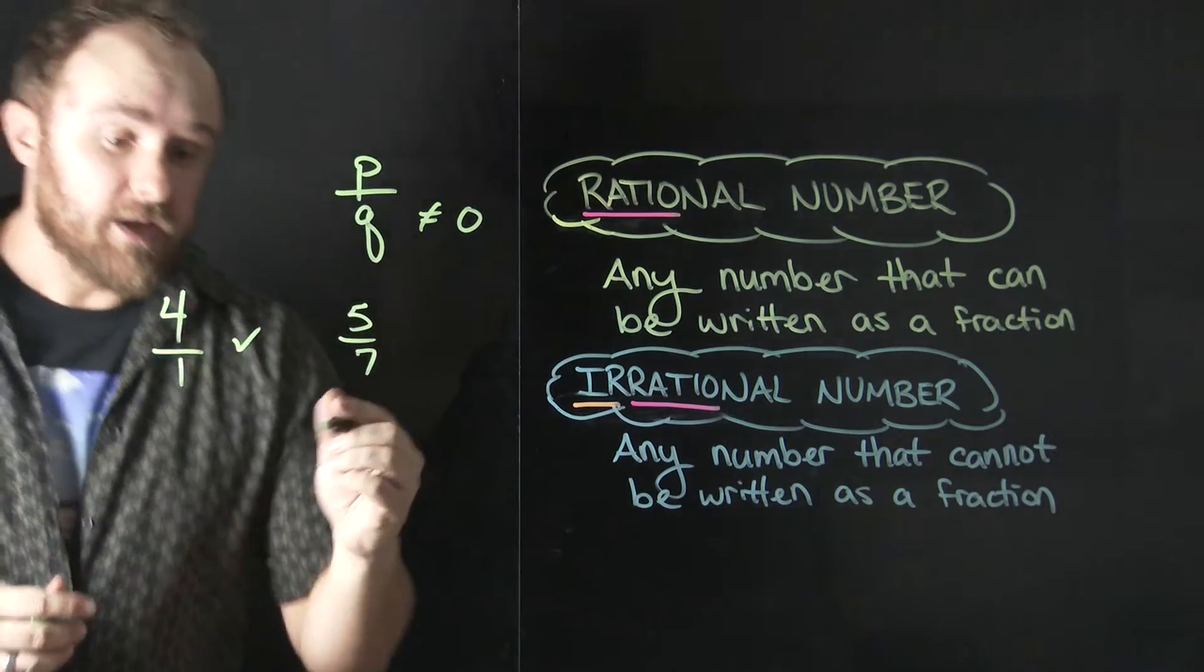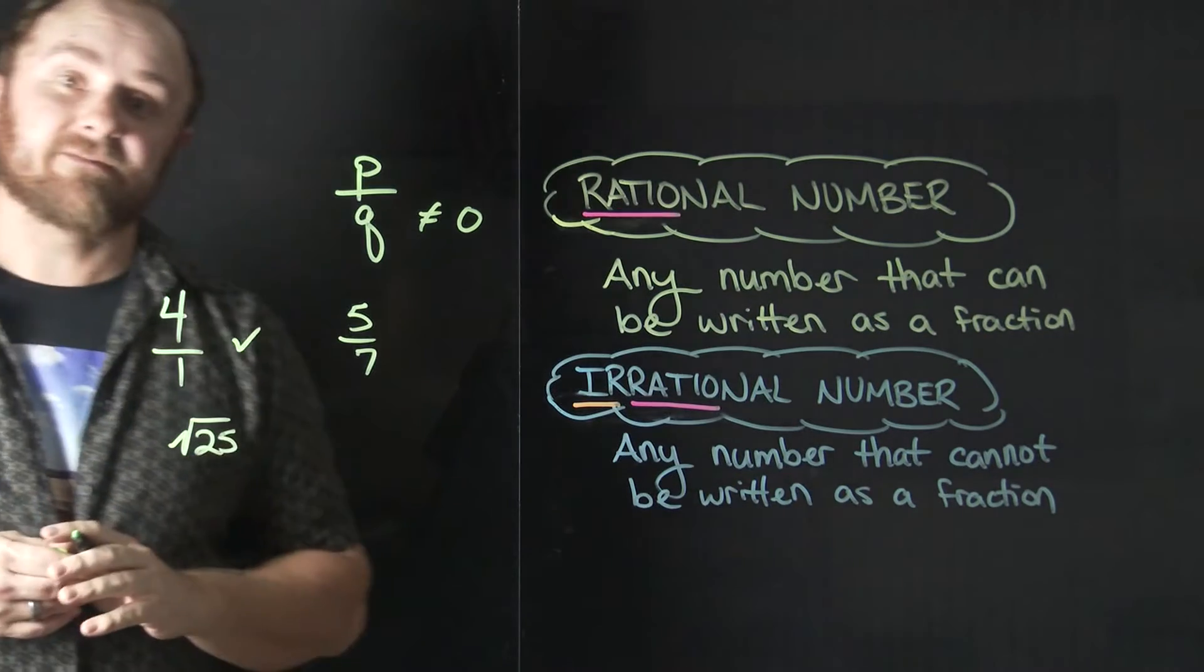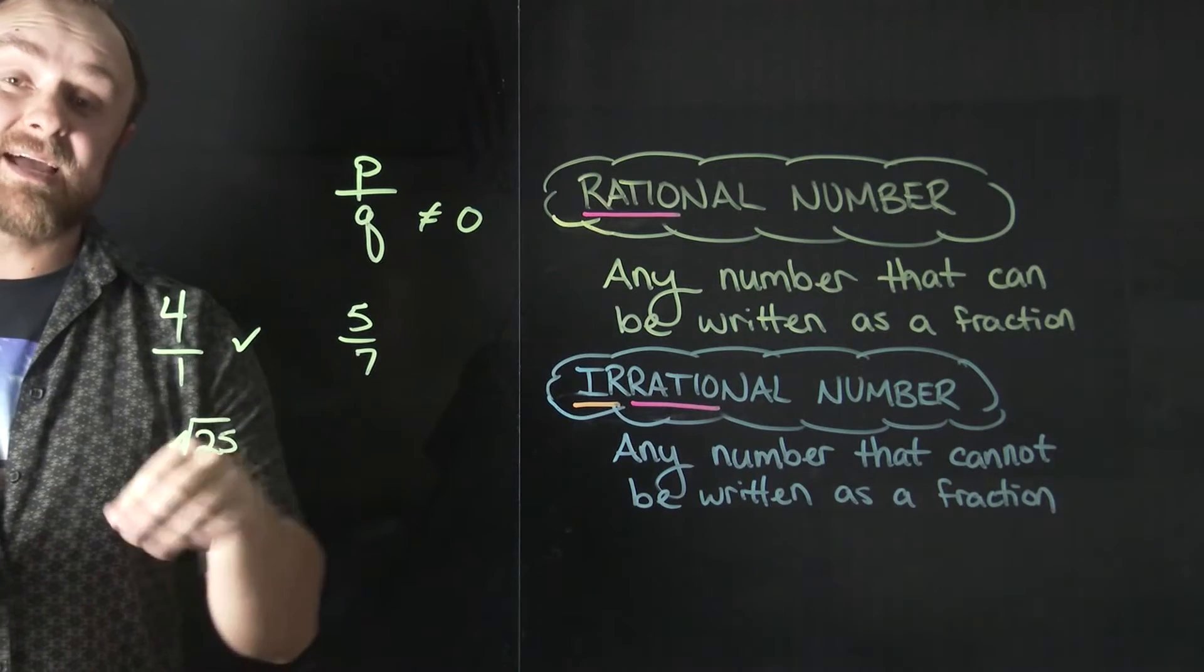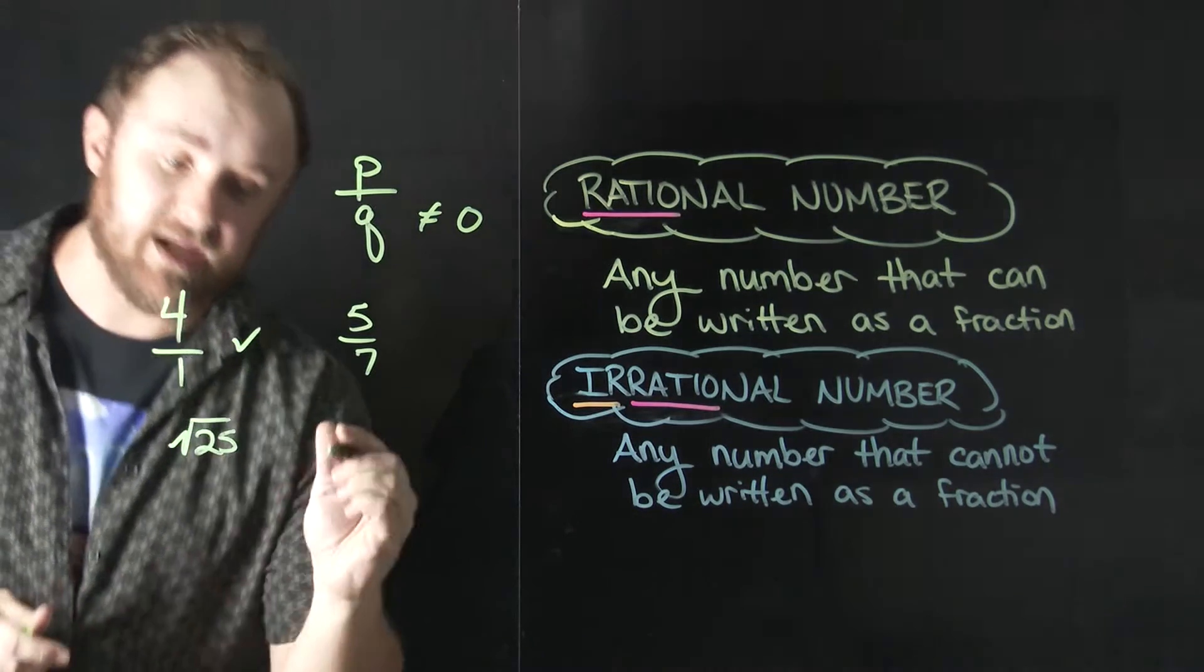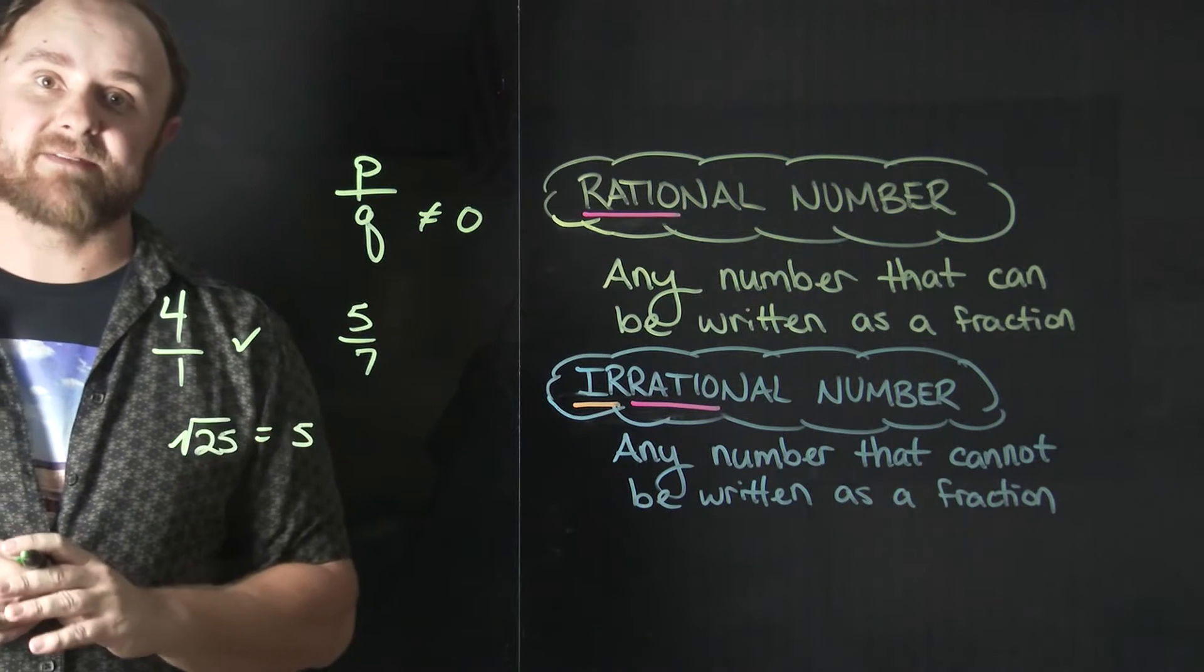Perfect squares. Remember, a square root, if I have the square root of 25, for example, I'm thinking to myself, what number times itself will give me 25? And we probably know that that number is five because five times itself, five times five is 25.